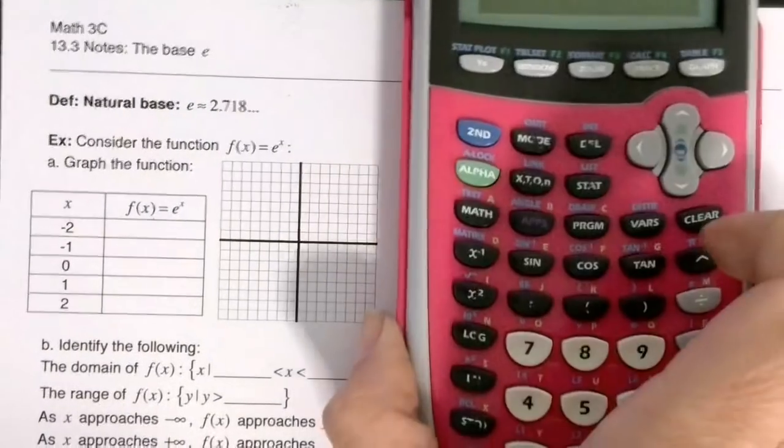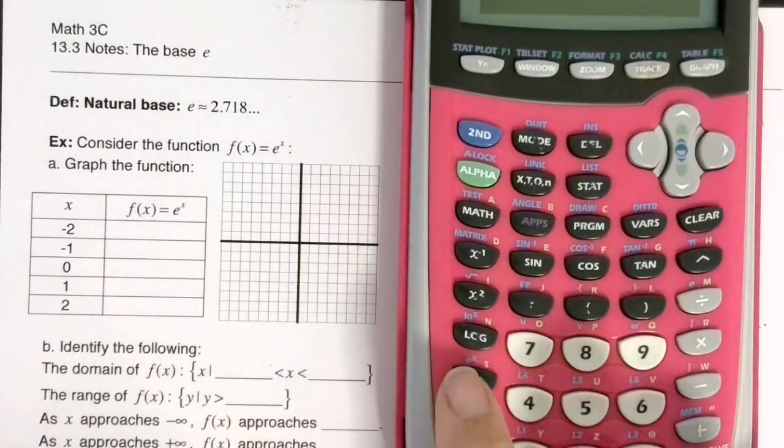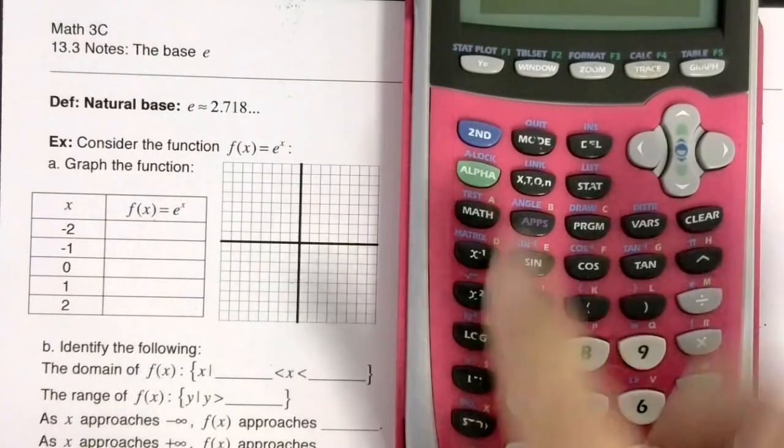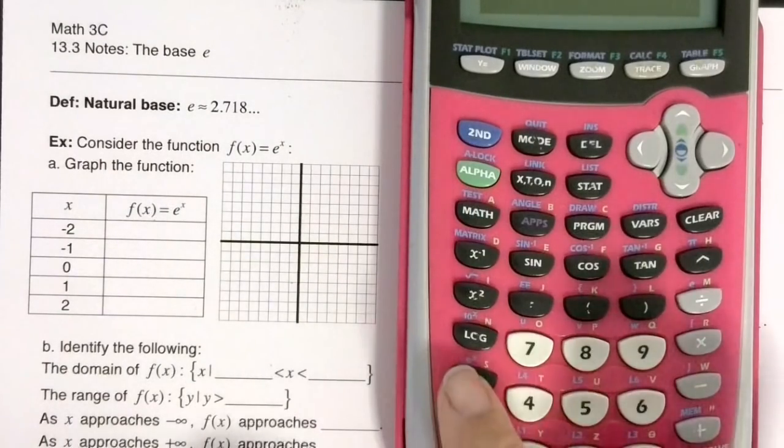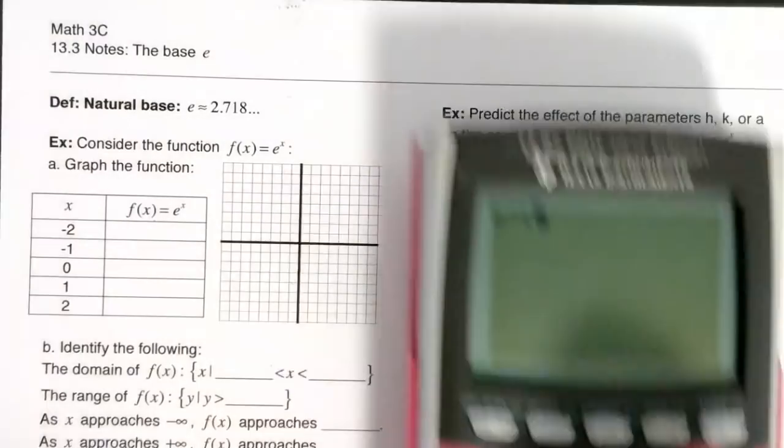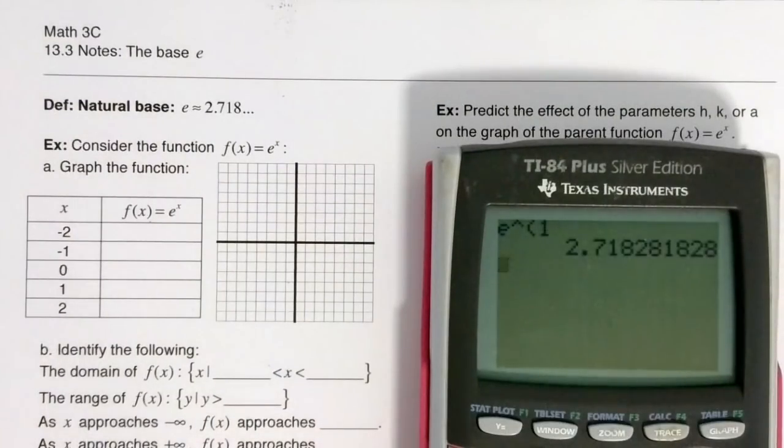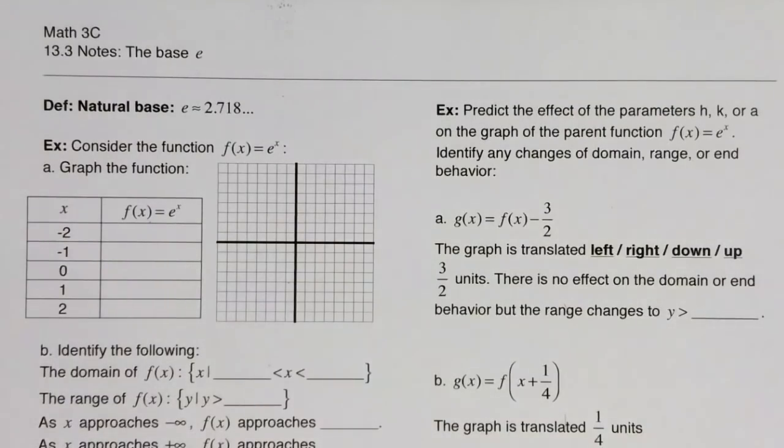In your calculator, if you look right here, you can see e to the x right there. If I do e to the x to the first power, there's the approximation. It's a number kind of like pi where it doesn't have any pattern that repeats, and it keeps on going forever and ever.